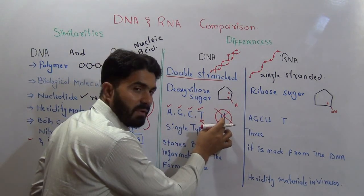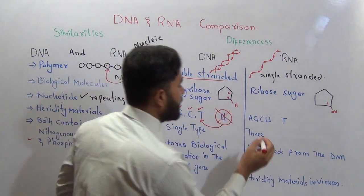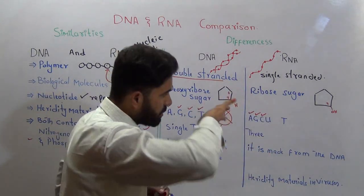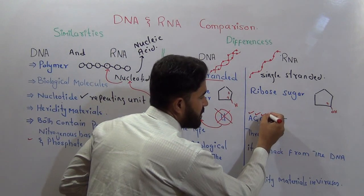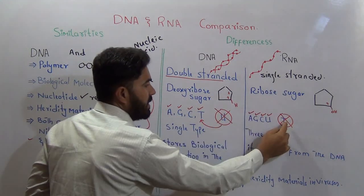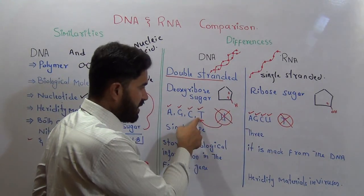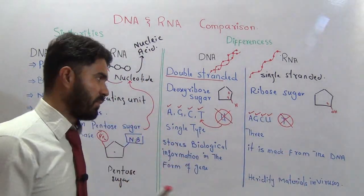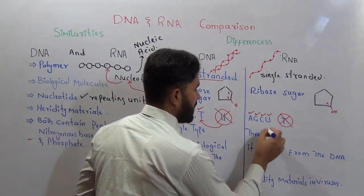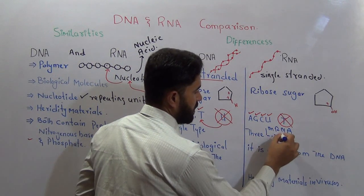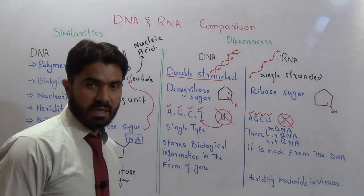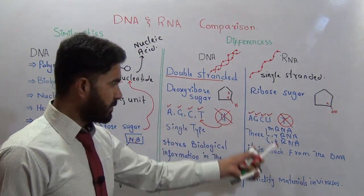In RNA, adenine, guanine, and cytosine are present, but thymine is not — instead, uracil is present in RNA. In simple words, in place of uracil, DNA has thymine, and in place of thymine, RNA has uracil. Additionally, DNA is only a single type, whereas RNA is of three types: messenger RNA (mRNA), ribosomal RNA (rRNA), and transfer RNA (tRNA).